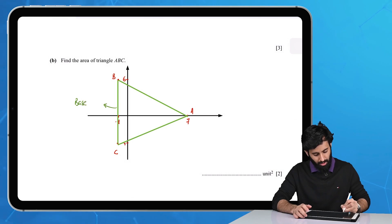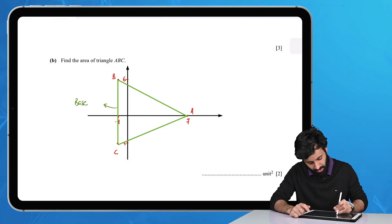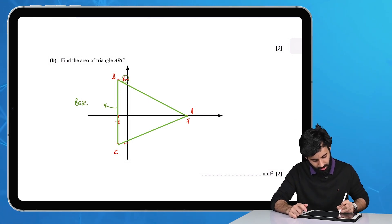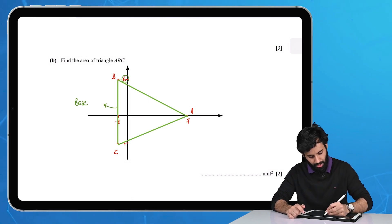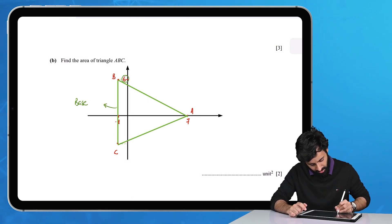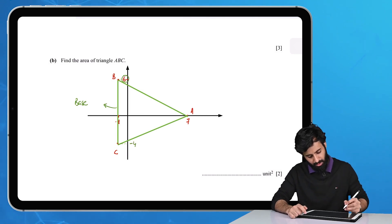Finding the area should be pretty simple now. We're going to take this length to be our base. This line starts at 6 and goes down to -4.